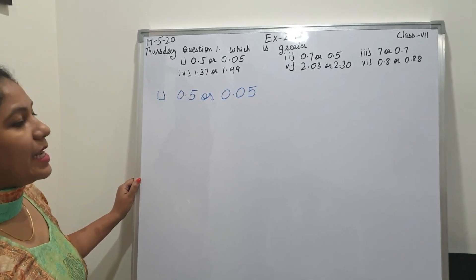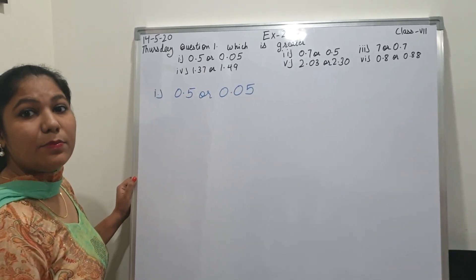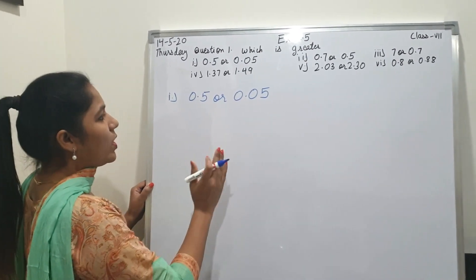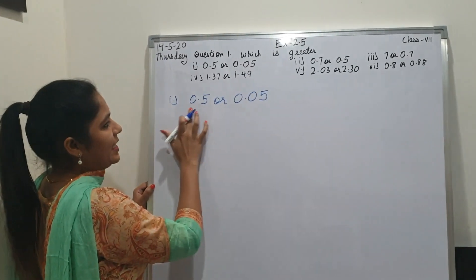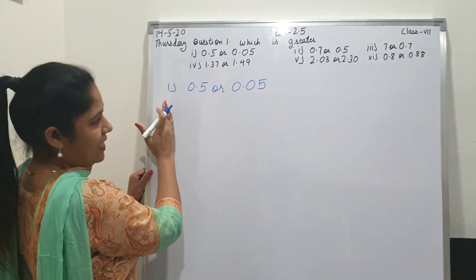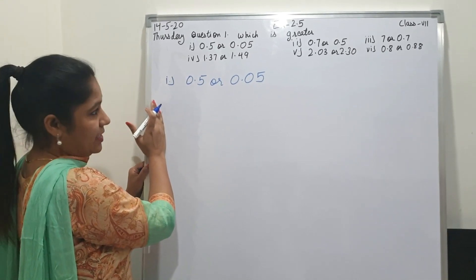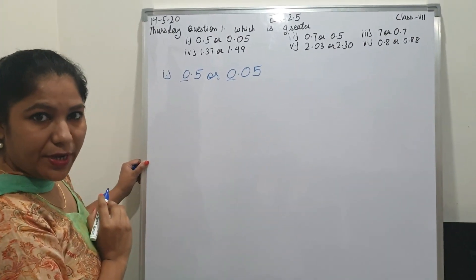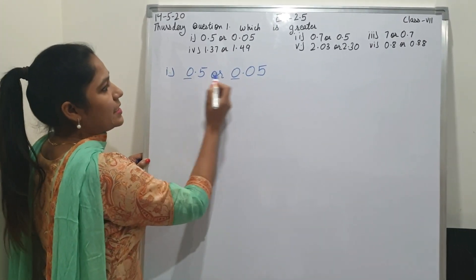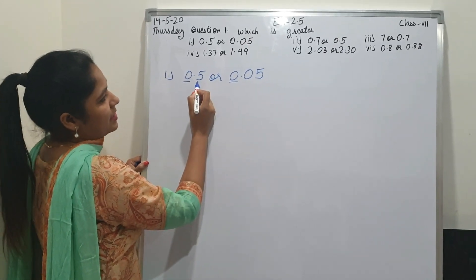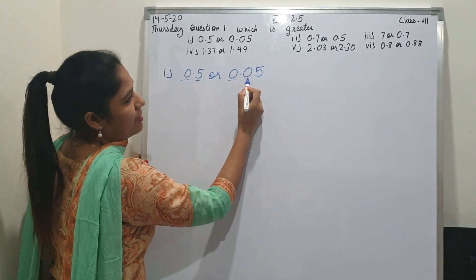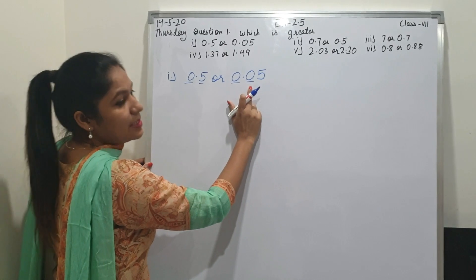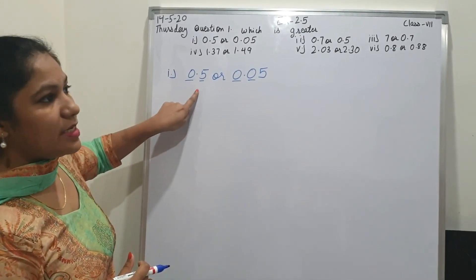As we know about like decimals, which we have done in the previous period or lecture. We will see these digits from the left hand side. Left hand side here is 0, here is 0. So we can't predict which one is greater. Move further — after decimal, here is 5 and here is 0. Which one is greater? 5. 5 is greater than 0, so we can conclude that this one is greater.